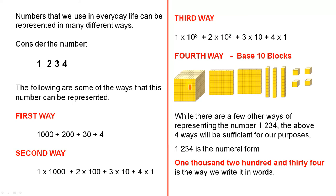With the base 10 blocks: that's 1000, that's 200 there altogether, then 10, 20, 30 — so that part is 30 — and there are 4 single blocks.